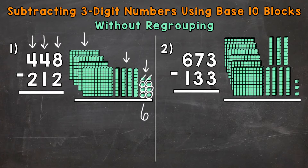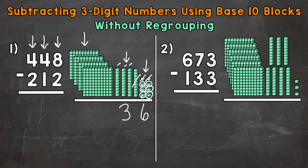Let's move to the tens. We have 4 tens, which has a value of 40, minus 1 ten, which has a value of 10. So 4 tens minus 1 ten — let's subtract or take away 1 ten: 1. How many do we have left? 1, 2, 3. So we have 3 in the tens place.